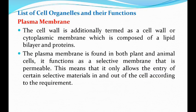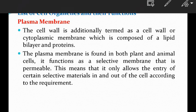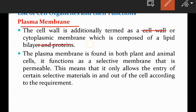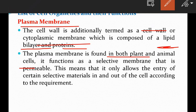The first organelle is the plasma membrane. The plasma membrane is also termed as cell wall or cytoplasmic membrane, which is mainly composed of a lipid bilayer and proteins. The plasma membrane is found in both plant and animal cells. It functions as a selective permeable membrane.